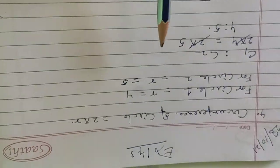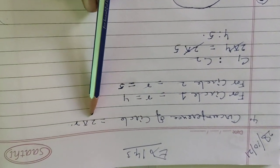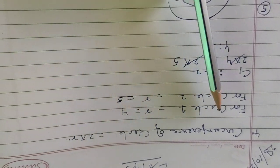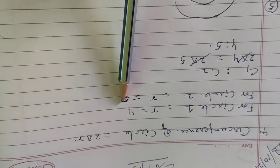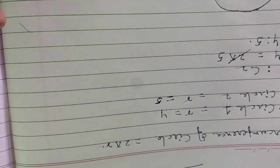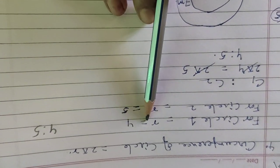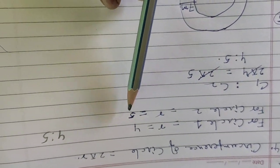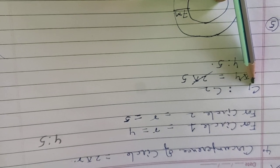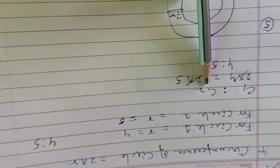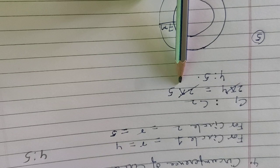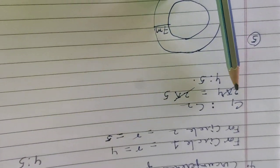Find the ratio of the circumferences of two circles whose radii are in ratio 4 is to 5. The circumference of a circle is 2πr. For circle one, the radius is r, and for circle two, the radius is 5. Now circle one is in ratio to circle two: 2πr for circle one equals 2πr for circle two.